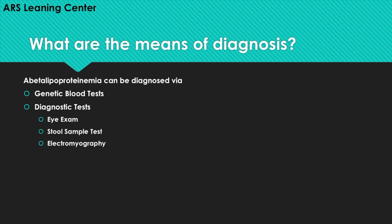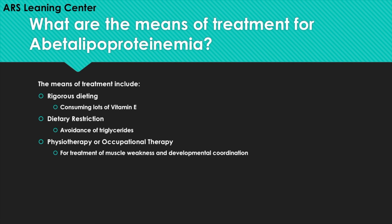What are the means of diagnosis? Abetalipoproteinemia can be diagnosed via genetic blood tests and diagnostic tests. The diagnostic tests can range from eye exams, stool sample tests, and electromyography.